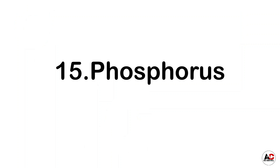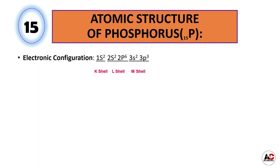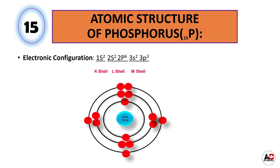Now the next element is phosphorus. The atomic number of phosphorus is 15, meaning it has 15 electrons total. The electronic configuration of phosphorus is 1s2, 2s2, 2p6, 3s2, and 3p3. So the atomic structure of phosphorus will be like this. It has 15 protons and 16 neutrons inside the nucleus and 15 electrons around the nucleus, arranged like this: 2 are in the K shell, 8 are in the L shell, and 5 are in the M shell.